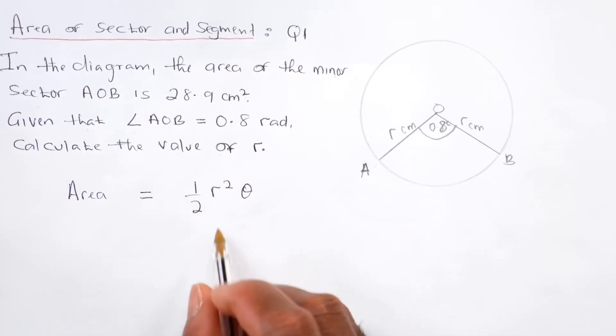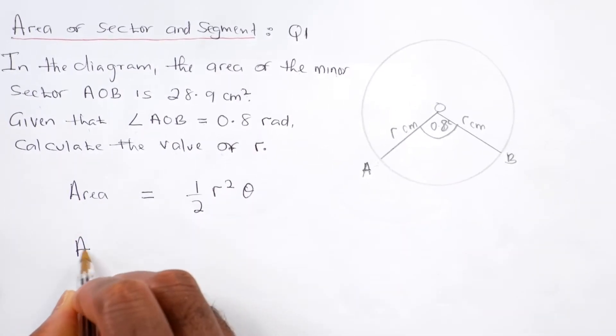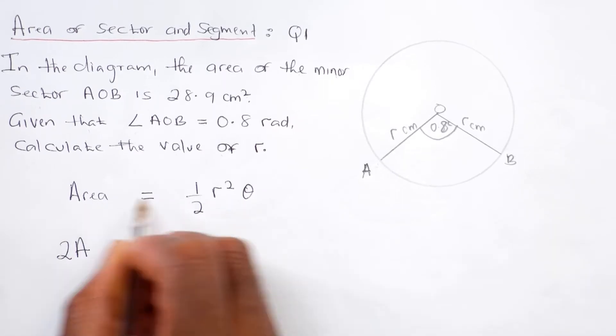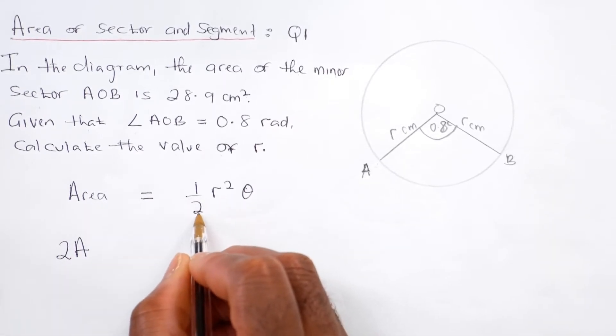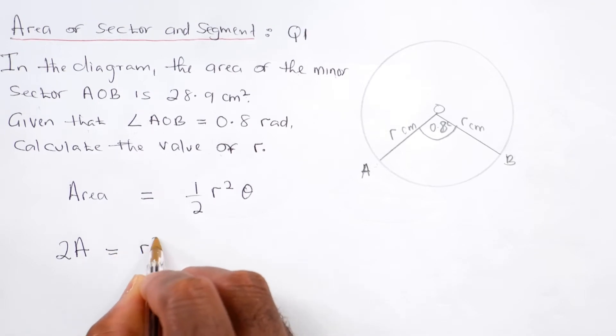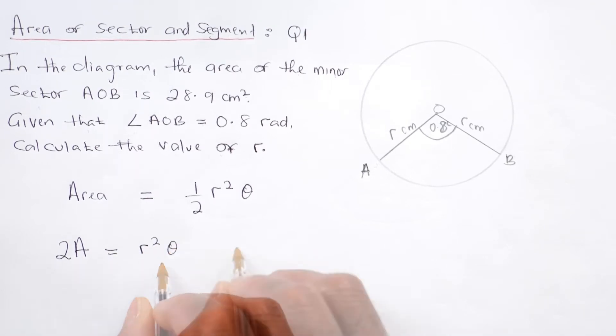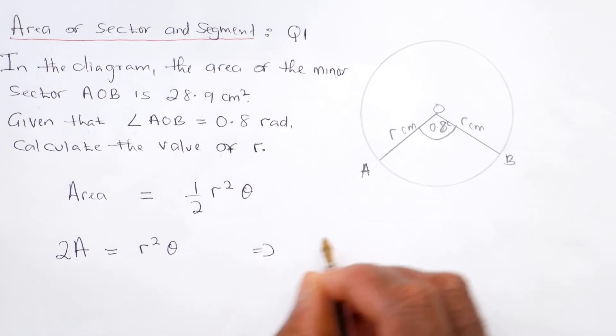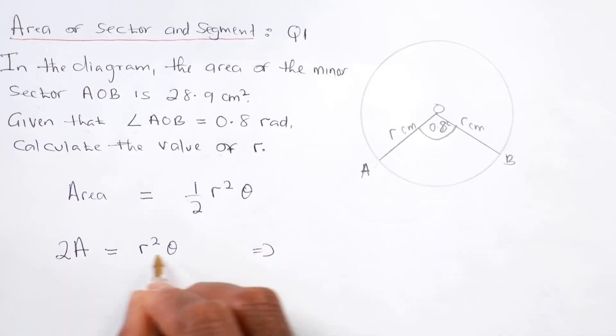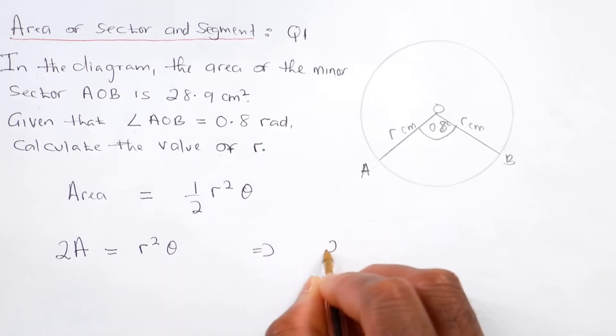So multiplying both sides by 2 to get rid of the half would be equal to r squared theta. And that implies that, dividing both sides by theta, 2A over theta will be equal to r squared.